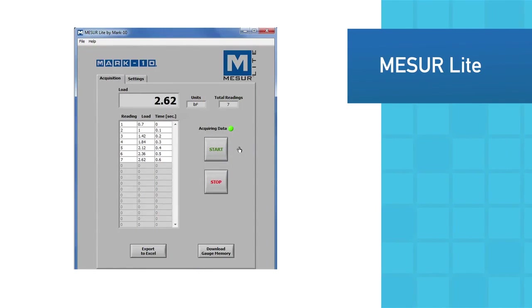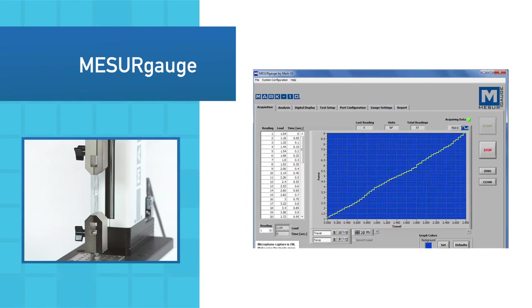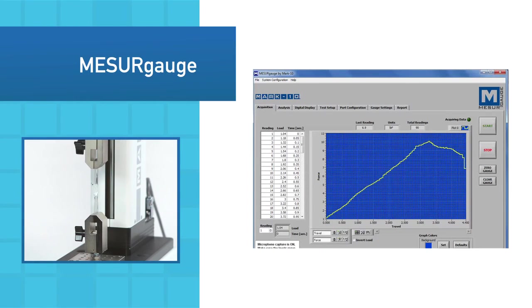The included MeasureLite data collection software tabulates data and allows for export to Excel. The more advanced measure gauge graphs data, calculates statistics, generates reports, and performs other functions.